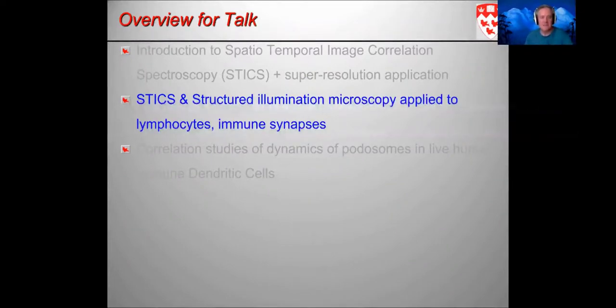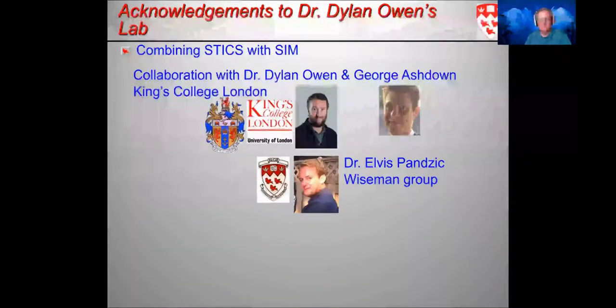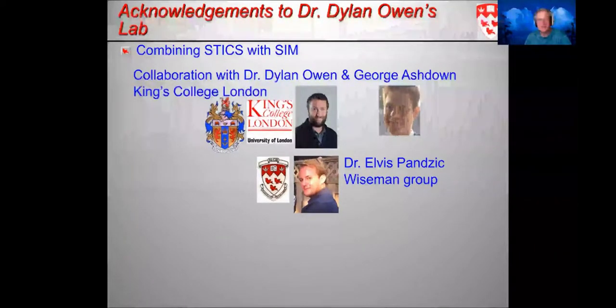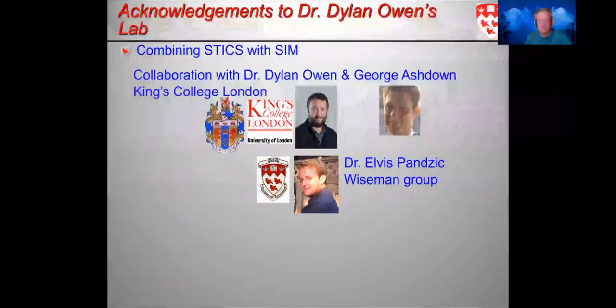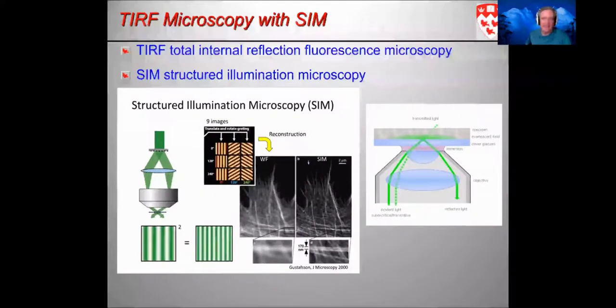The first of the research applications is space-time image correlation applied in combination with super resolution microscopy imaging, structured illumination microscopy, looking at actin dynamics and membrane organization in T cells. This was a collaboration with Dr. Dylan Owen and George Ashdown, his PhD student. Dylan was at King's College then. He subsequently moved to University of Birmingham. Elvis Pancic, who was in my group as a grad student at the time, did programming of the correlation, space-time image correlation specific for this application.